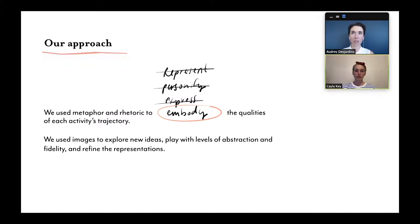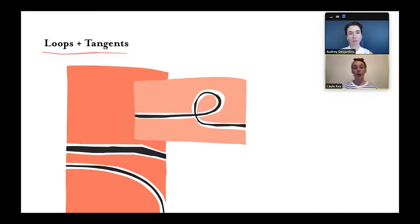To arrive to this series of 12 lines that describe our RTD process, we embarked on a reflexive analysis and took a deeper look at each activity's trajectory. We iterated on different word options and played with metaphors and rhetoric. We used images to explore new ideas and play with levels of abstraction and fidelity. We used sketches, diagrams, and conversations to bring clarity and depth. So in the pictorial, we present each line with an example from our research process, but for this presentation, we're going to focus on just two examples: loops and tangents.